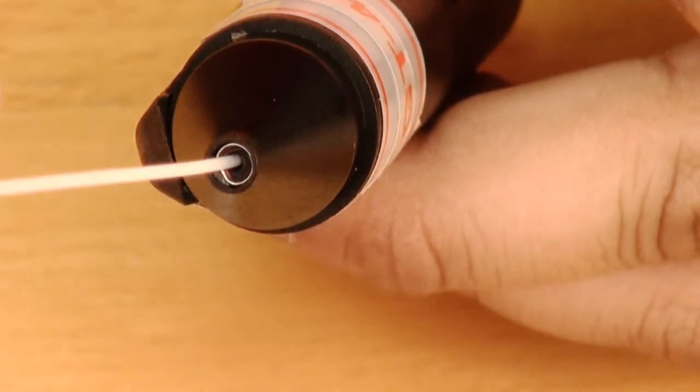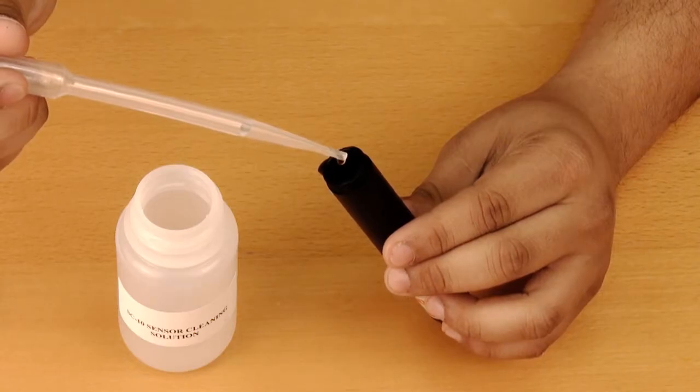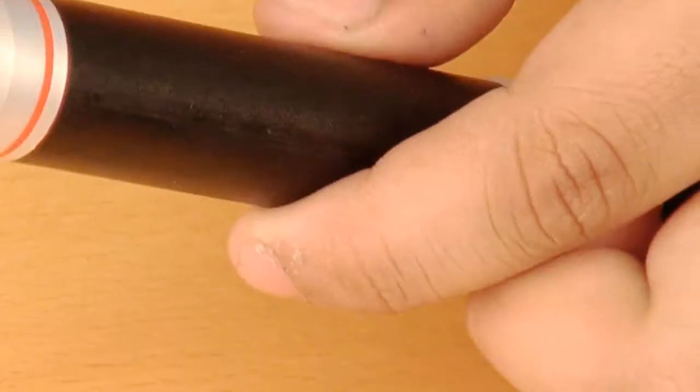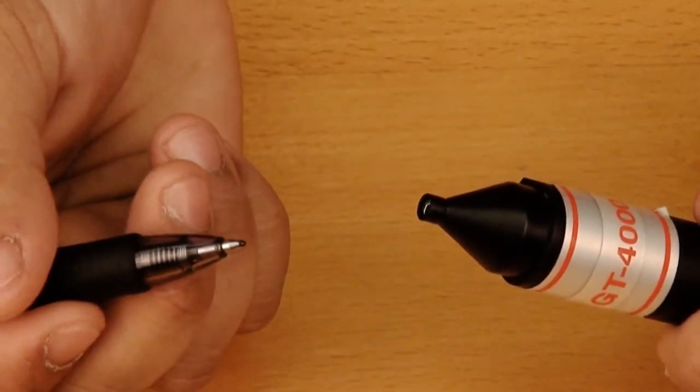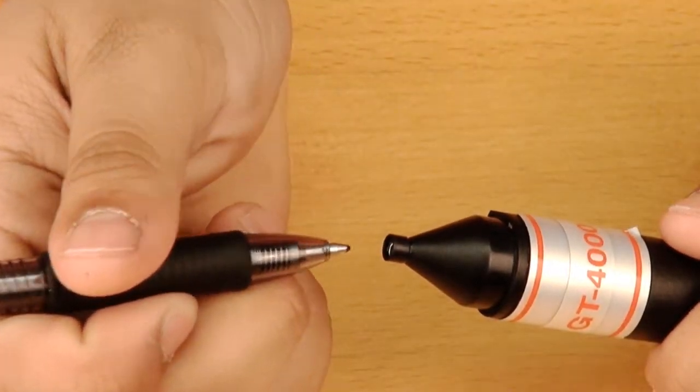After this, clean the sensor according to instructions given. Please be careful not to damage the metal ring insert embedded inside the tip of the sensor probe. Do not use sharp or hard objects to clean the sensor probe.